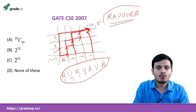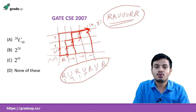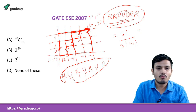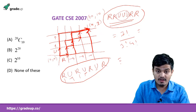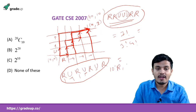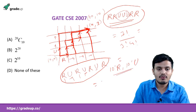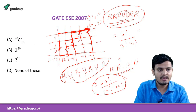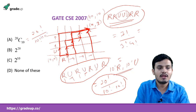So, the problem reduces to: how many permutations of 4 R's and 3 U's are there? The answer is 7! divided by 3! (for the repeating U's) and 4! (for the repeating R's). For the original question with (10,10), we have 10 R's and 10 U's, giving 20! / (10! × 10!). This is the same as C(20, 10), which matches option A.